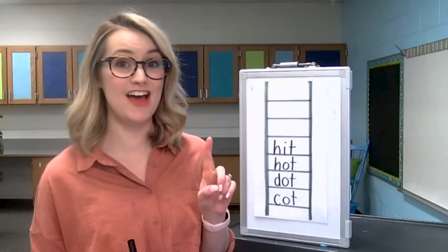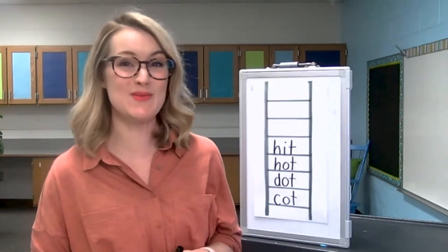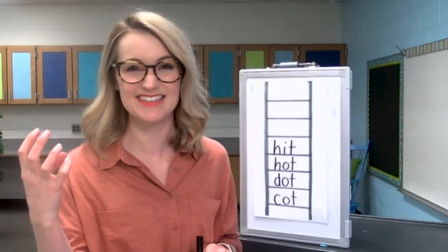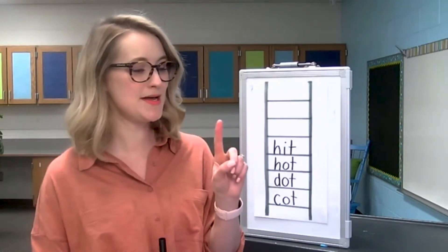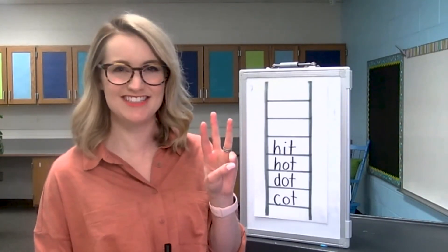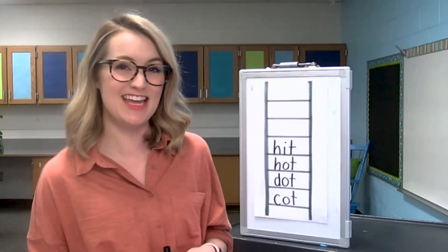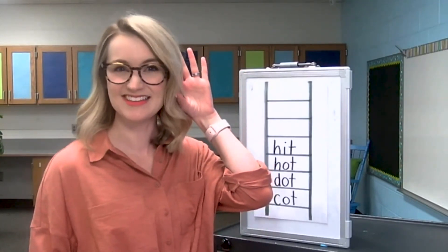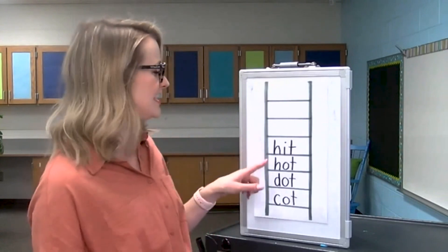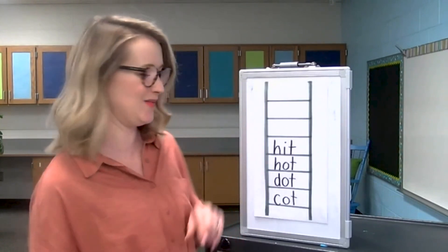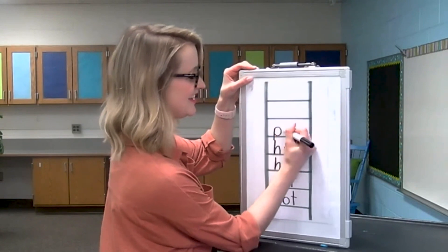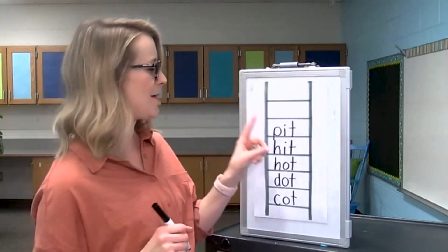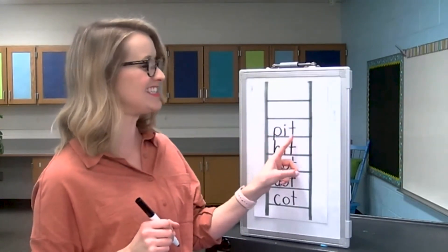Now we're going to change just one letter in the word hit to make the word pit. My fruit has a big pit in the middle. Pit. Let's listen for the sounds: P-I-T. Pit. What letter do you think will change to turn hit into pit? Yes, the beginning sound. We'll take out the H and put in a P. Let's write it down: P-I-T. Take your finger and let's check the letters: P-I-T. Pit. Great work.